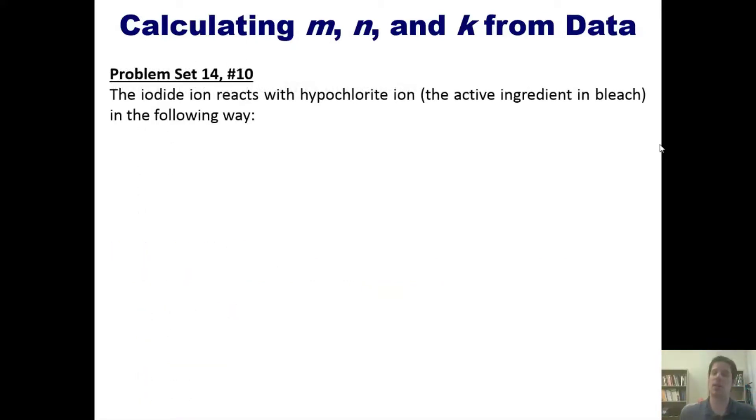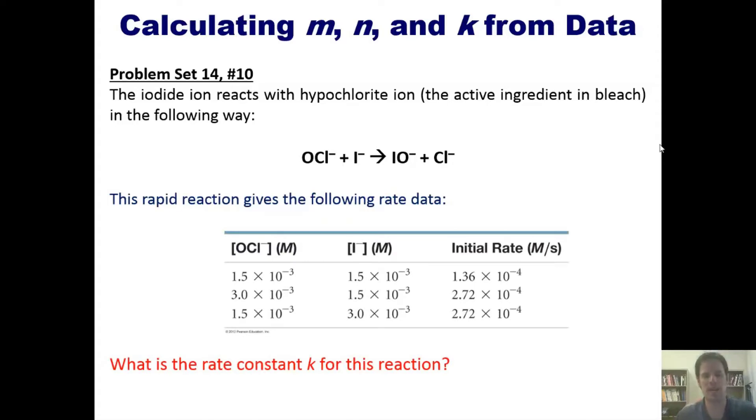That brings us to another great example. The iodide ion reacts with hypochlorite ion, the active ingredient in bleach, just so you know, in the following way. This rapid reaction gives the following rate data. What is the rate constant K for this reaction? Now once again, having done the example that we just did earlier, you're welcome to pause the video and attempt this on your own. You can then click this link to watch me solve it on the whiteboard.